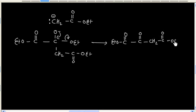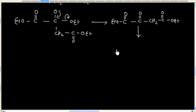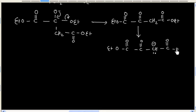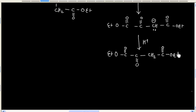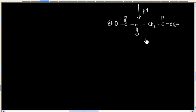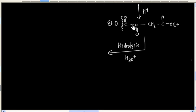And we will have this product. Since the medium is basic, we will get the salt of the corresponding product. If we do acidification, finally we will have the neutral product. Now if we do hydrolysis, we will have the corresponding acid — so we can break the bond here and do hydrolysis of this ester, giving us an acid.